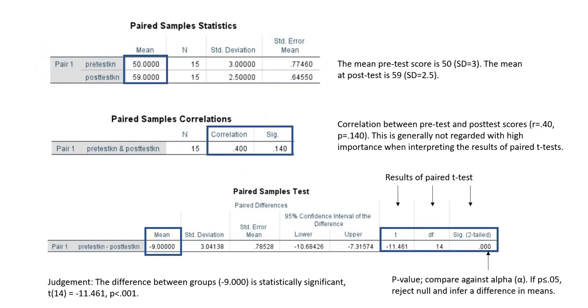Let's take a look at the output a little bit more closely. You'll see that under descriptive statistics, the mean at pre-test was 50, the mean at post-test is 59. So you can see that students gained nine points on average from pre-test to post-test.